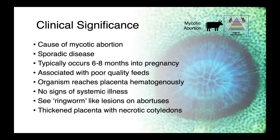In cattle, we can see Aspergillus as a cause of mycotic abortion. This tends to be a sporadic disease which occurs six to eight months into pregnancy. It is associated with poor quality feed, so whether it's consumption of the fungus or breathing in the spores, the Aspergillus spores reach the placenta hematogenously, and we don't typically see any systemic signs of illness. The animal seems like it's doing fine, and then the abortion occurs.